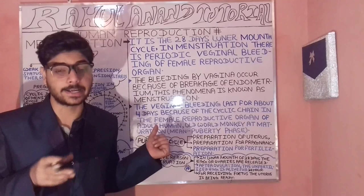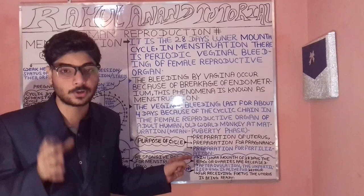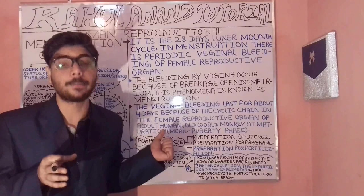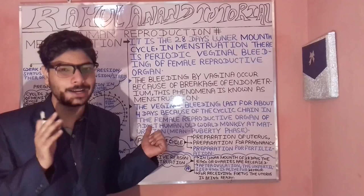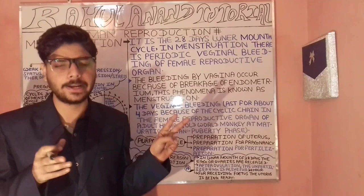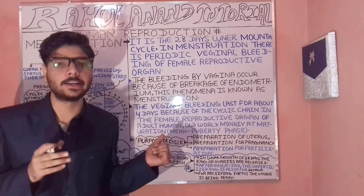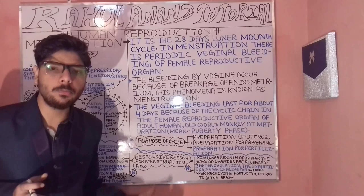In the case of menstruation flow, no implantation occurs — this is the opposite of pregnancy. When there is no implantation, the endometrium becomes particularly thick in nature. It has two parts: the mesometrium and the perimetrium. When the endometrium becomes thick and no implantation occurs, the process reverses.